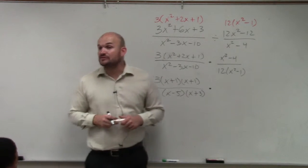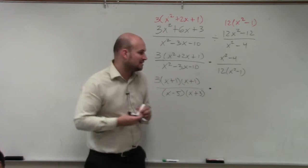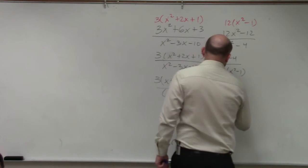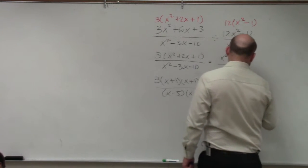x squared minus 4, that is a difference of two squares. You have a squared term minus another squared term. Difference of two squares would be x minus 2 times x plus 2.